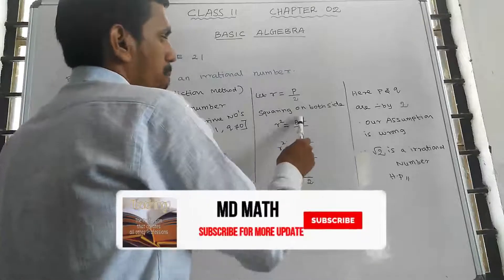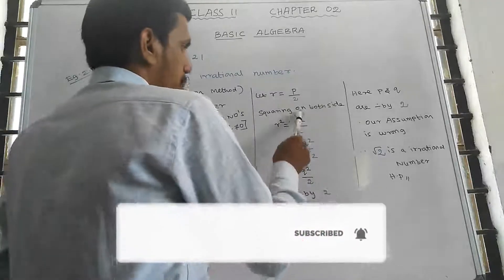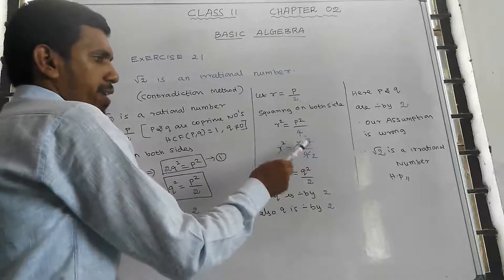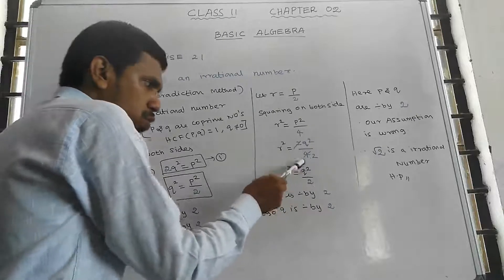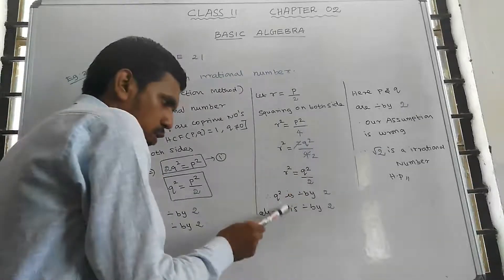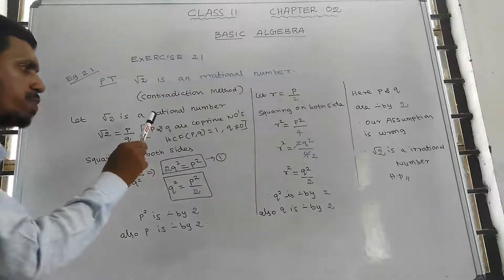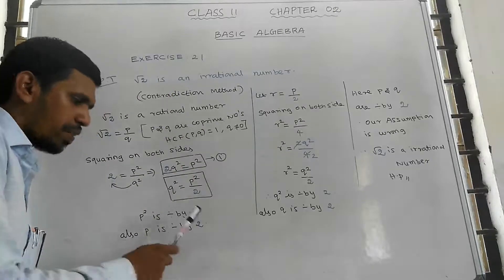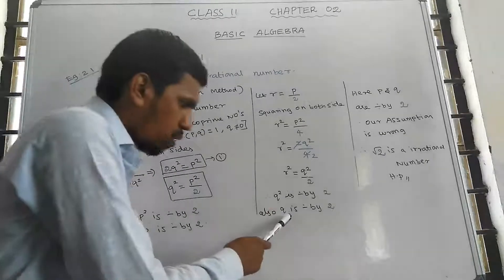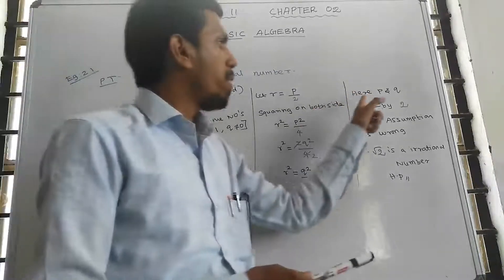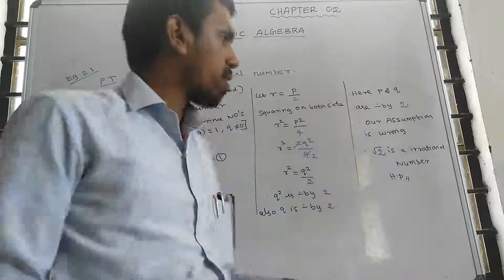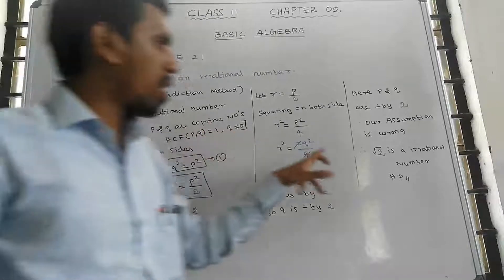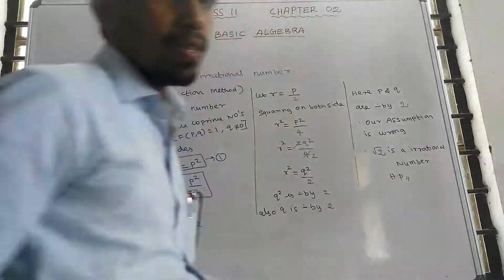Substituting p equals 2r back into 2q squared equals p squared gives q squared equal to 2r squared, meaning q is also divisible by 2. So both p and q are divisible by 2, which contradicts our assumption that p and q are co-prime. Therefore our assumption is wrong, and root 2 is an irrational number. Hence proved.